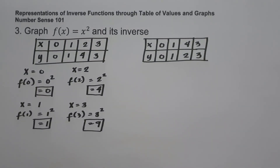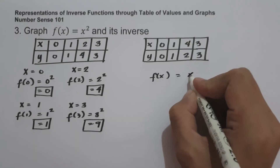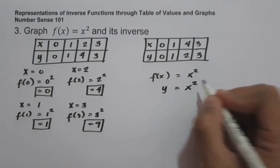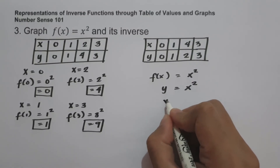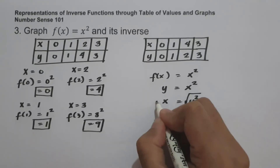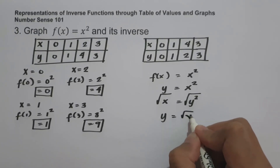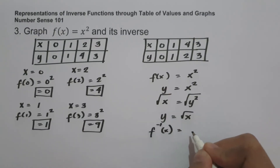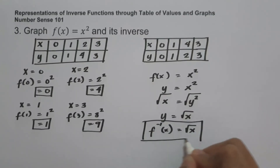To find the inverse algebraically, start with f of x equals x squared, rewrite as y equals x squared, then interchange x and y to get x equals y squared. Taking the square root of both sides gives y equals the square root of x. So the inverse of x squared is the square root of x.